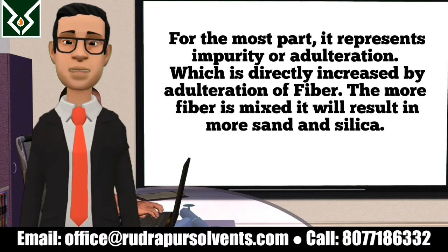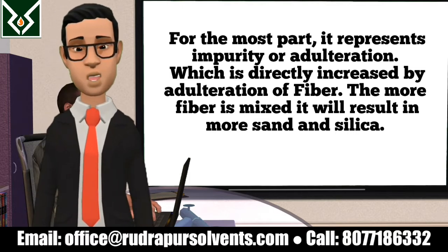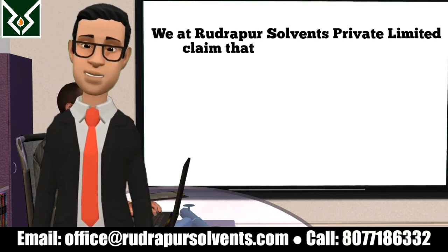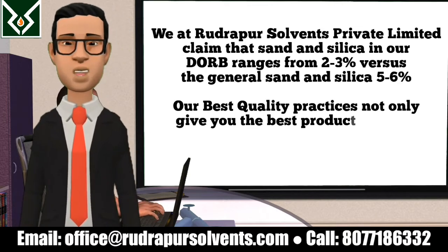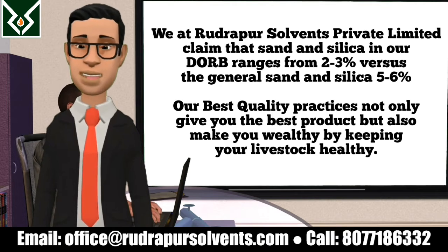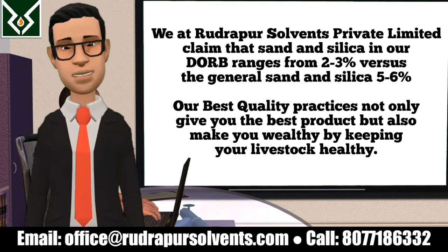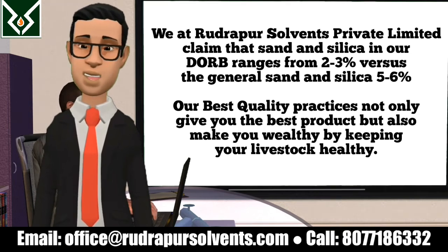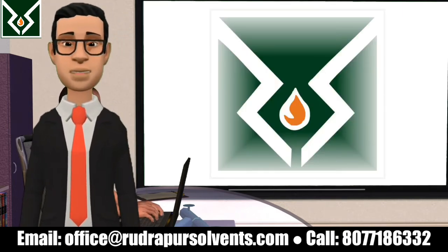Sand and silica is directly increased by adulteration of fiber. The more fiber is mixed, it will result in more sand and silica. We at Rudhapur Solvents Private Limited claim that sand and silica in our DORB ranges from 2 to 3 percent versus the general sand and silica of 5 to 6 percent. Our best quality practices not only give you the best product but also make you wealthy by keeping your livestock healthy. Good day.